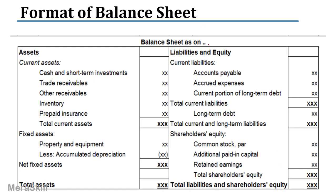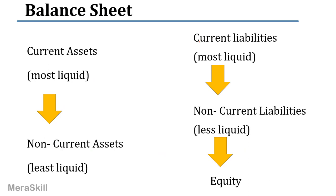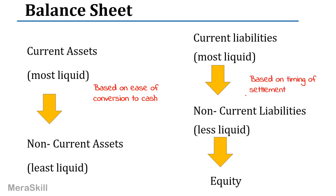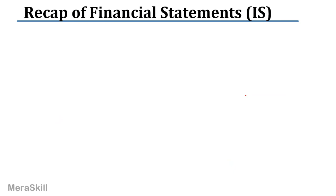It's a statement as on a particular date. Current assets — the most liquid assets — are presented first in order of liquidity, based on ease of conversion to cash, then non-current assets. Similarly, current liabilities are short-term obligations paid quickly, and non-current liabilities are paid later. Based on the timing of settlement, you decide whether it's current or non-current.